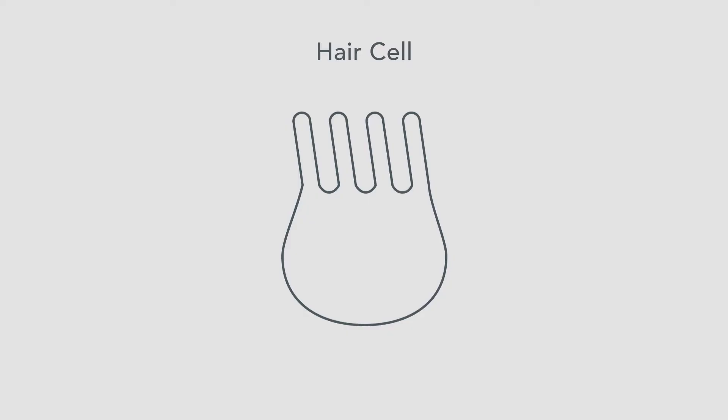The hair cell would look like this, and of course it's got its nucleus like all cells do. The super cool part is that the cilia — stereocilia, the little hairs at the top of the cell — are connected by these almost unimaginably small little springs called tip links.